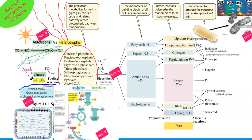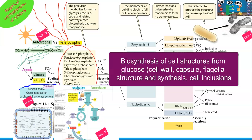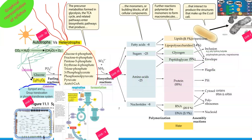In Unit 3, you directly look at the biosynthesis of various cell structures. Having seen how nutrients are taken inside the cell in Unit 2, Unit 3 covers how those nutrients form different structures within the cell — for example, how cell inclusions are formed, how the cell wall is formed, and how flagella assembly is created inside the bacterial cell.